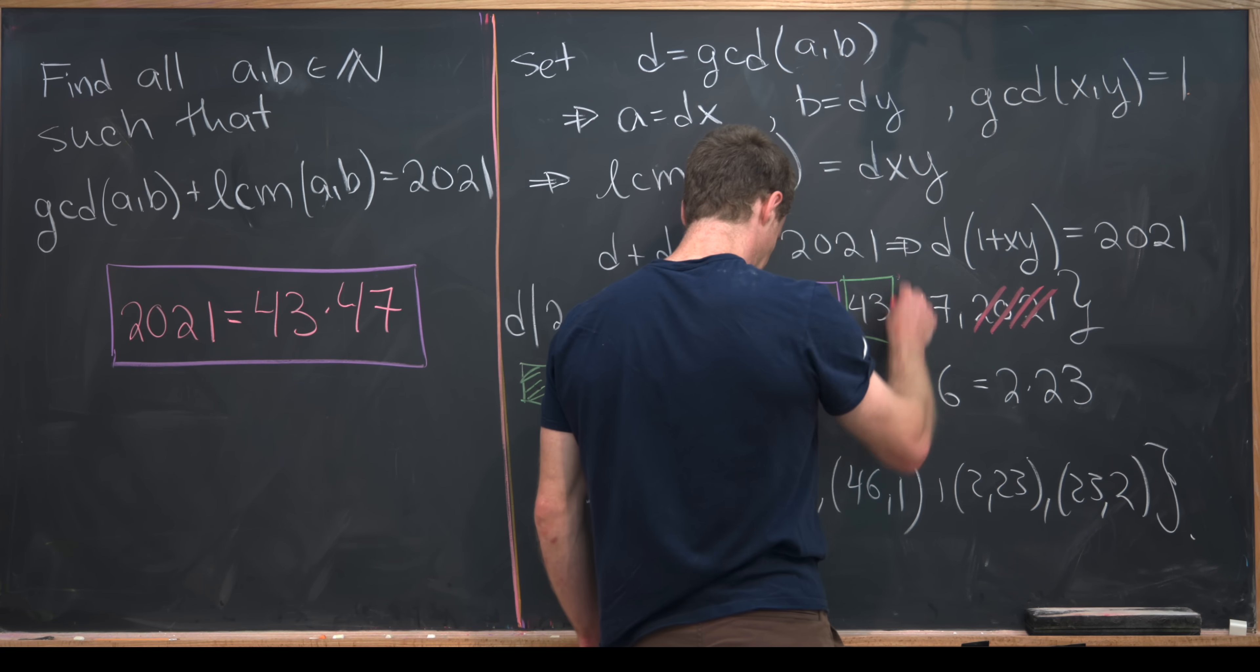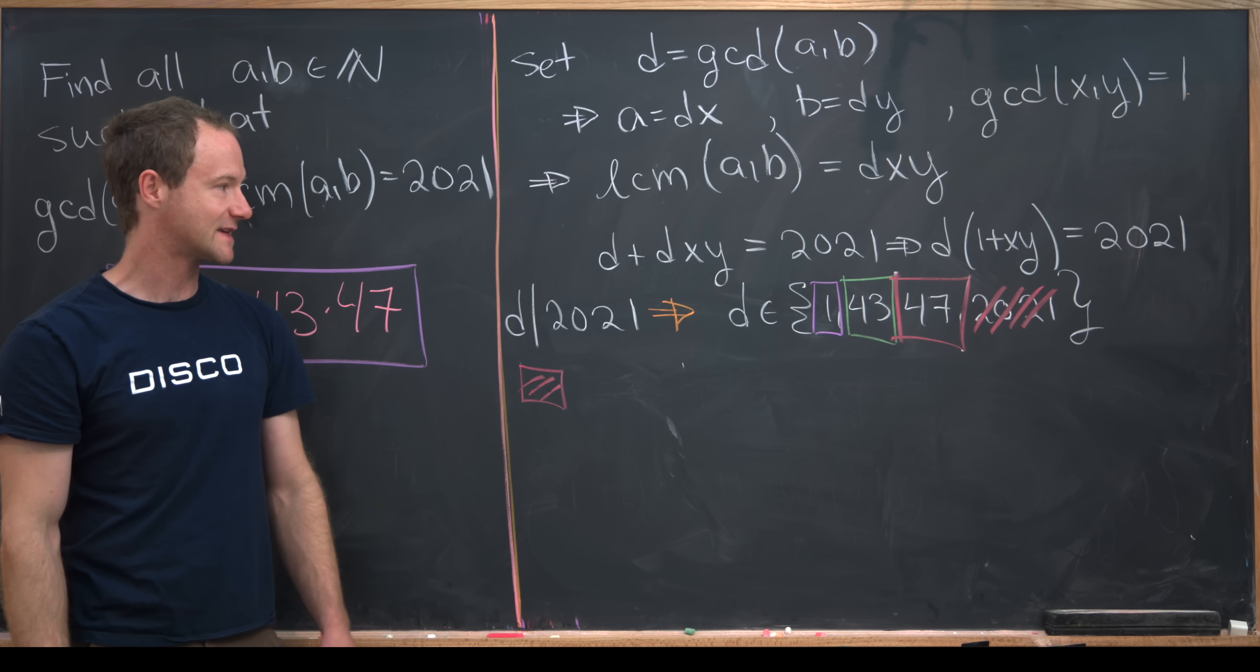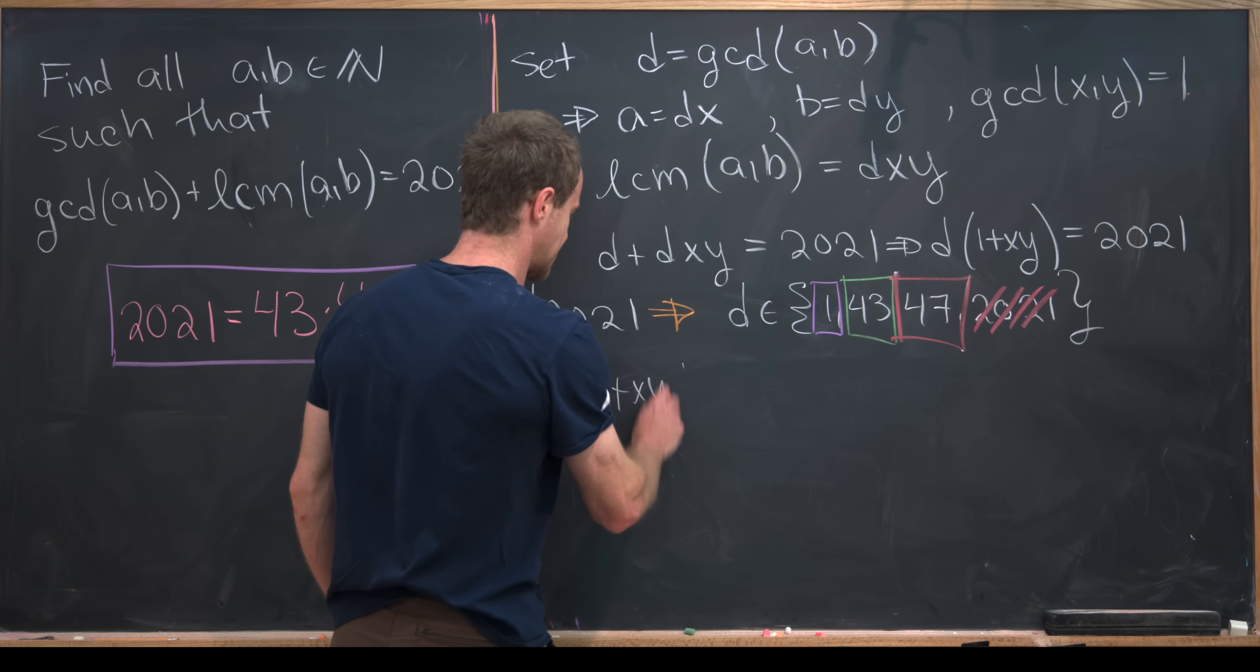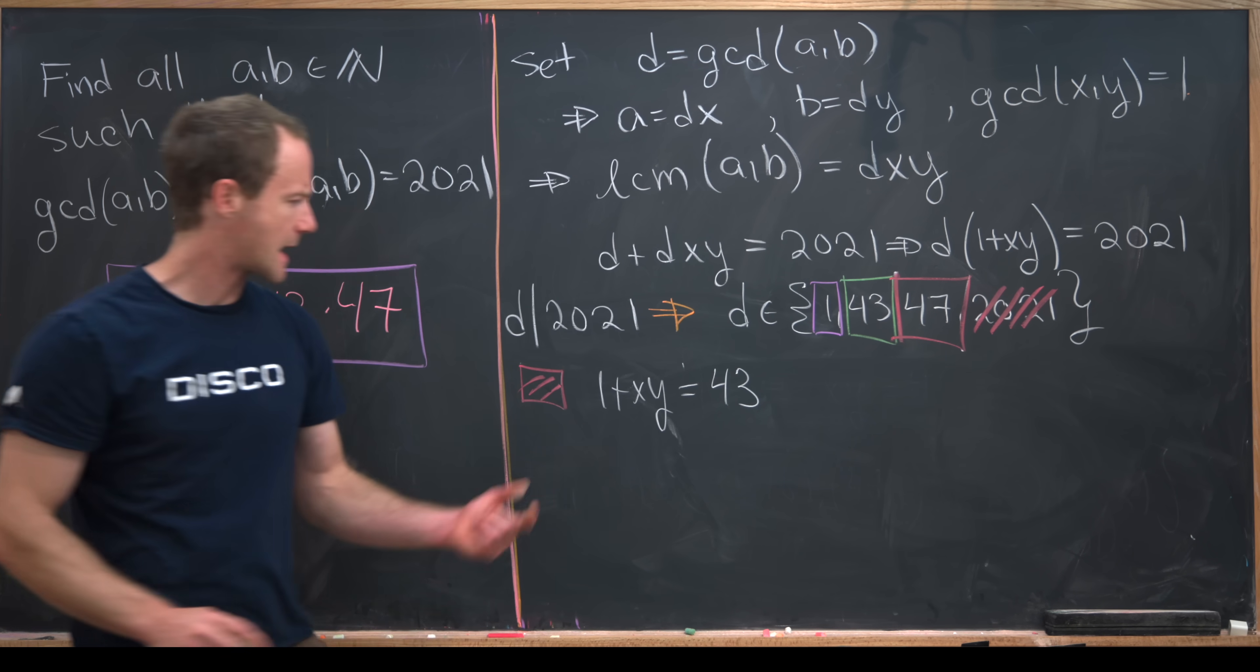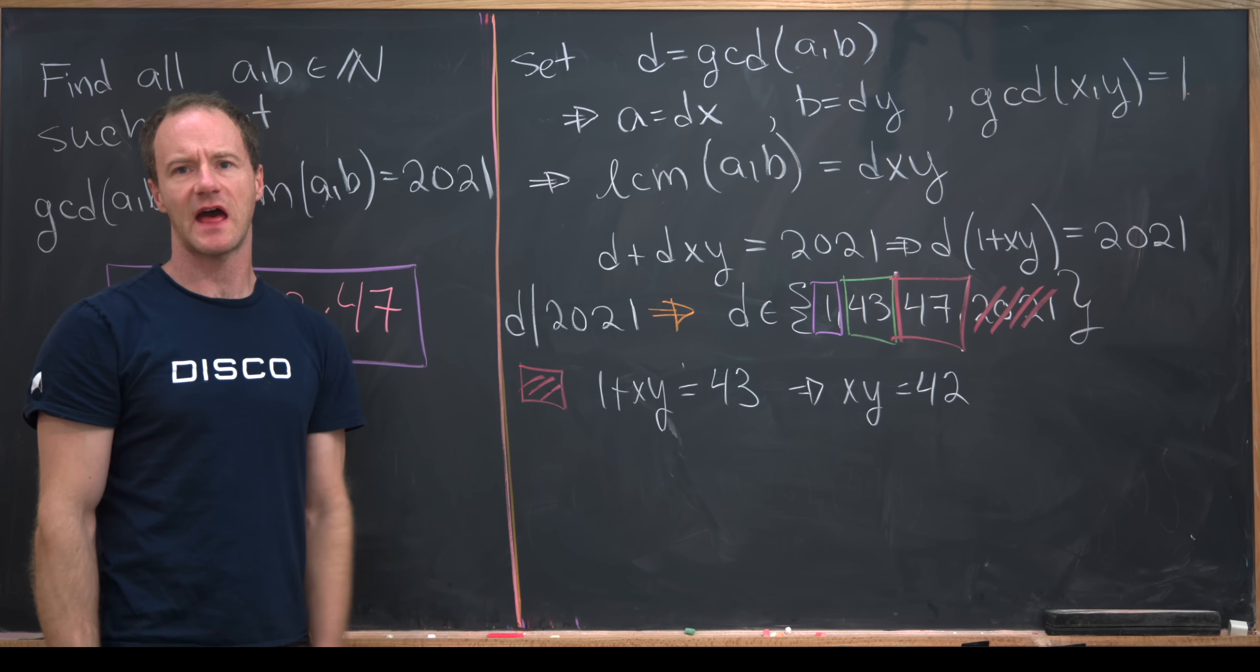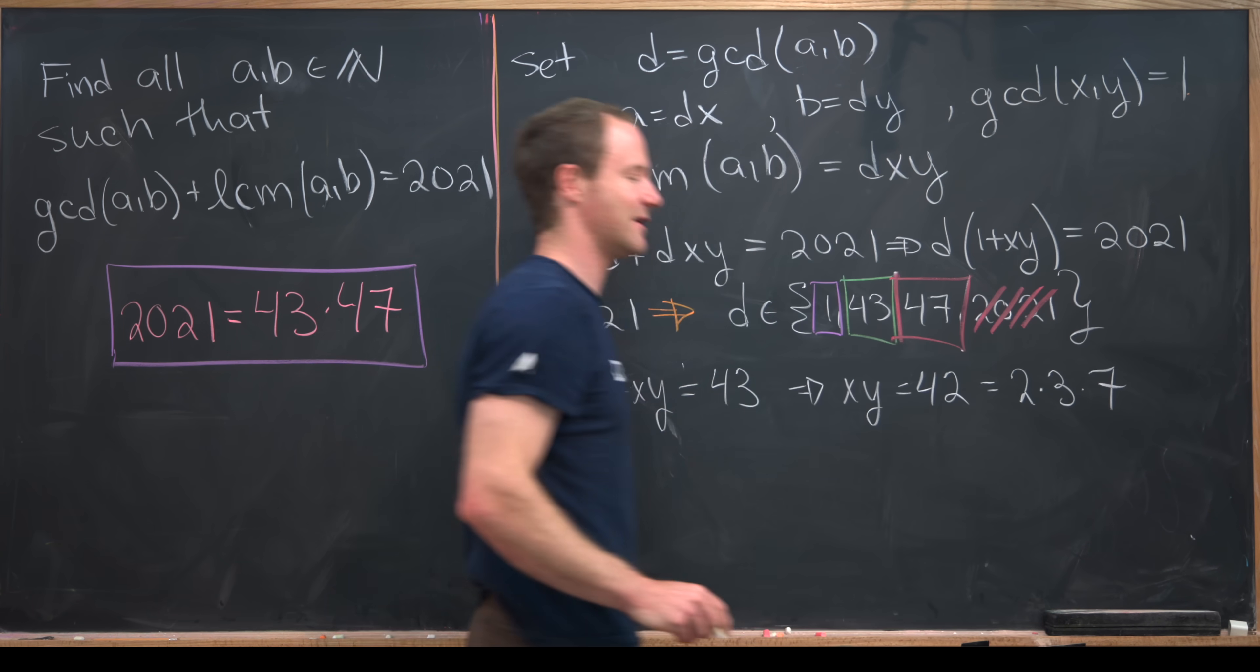Now we're ready to look at our last case, which is when D is equal to 47, where that's the greatest common divisor of A and B. In this case, we have 1 plus XY is equal to 43. But that means that X times Y is equal to 42. We can factor that into a product of powers of primes. Let's see, what would that be? That would be 2 times 3 times 7.